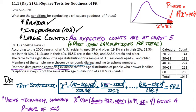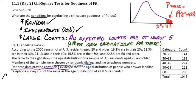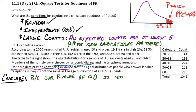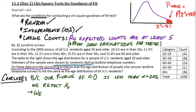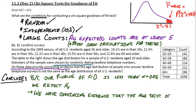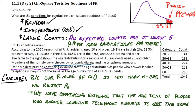Since the p-value is approximately 0, which is less than our alpha level of 0.05, we reject the null hypothesis. In context, we have convincing evidence that the age distribution of people who answer landline surveys is not the same as the age distribution of all U.S. residents.